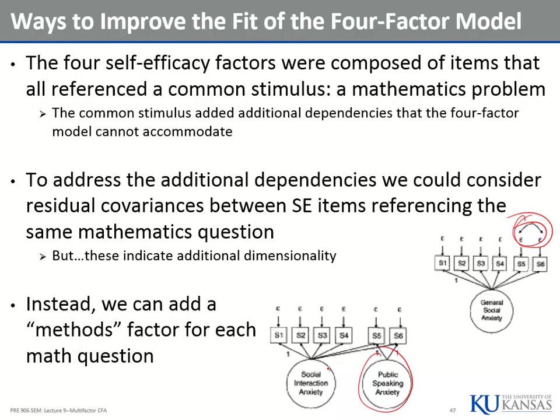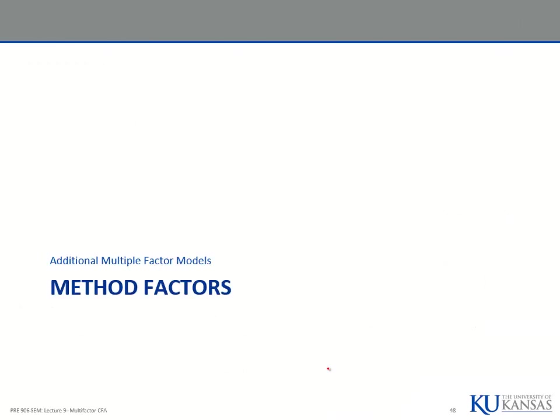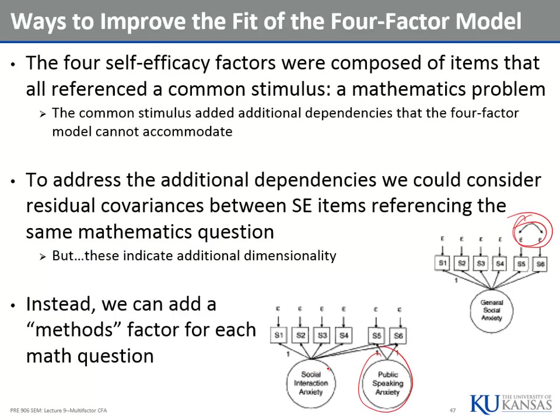Our survey was designed so that we have this additional set of things that influence responses, and we're going to develop method factors to fix it. A student asked if this ties to a multi-trait multi-method matrix — and yes it does. What we're going to do is specify the factor analytic analog of that. We don't need to separate the data into covariances — we just specify the factors that would imply a multi-trait multi-method matrix.